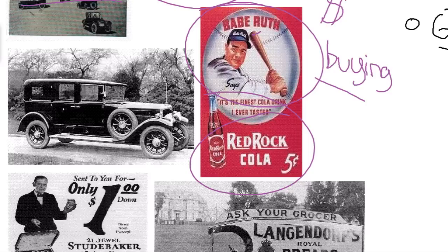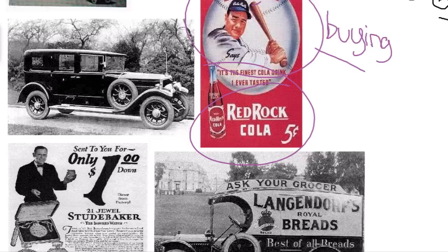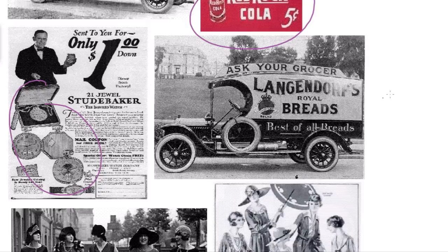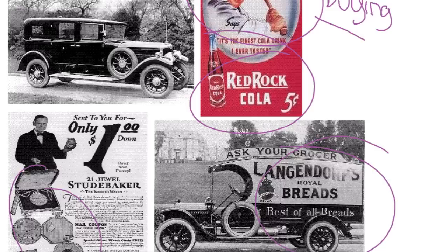Advertising becomes very important, especially the celebrity endorsement. Here we have Babe Ruth — he drinks Red Rock Cola and so should you. Advertisements for a pocket watch or a bread company on the side of a car show that people begin to see a lot more exposure to purchasing. Advertisers begin to use psychology and psychological selling principles to get people to buy stuff, making advertising a very important part of this growing consumer economy.